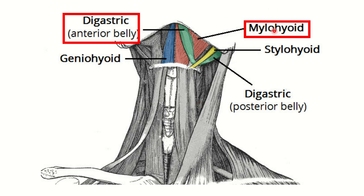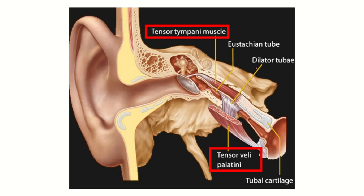Here we can see the mylohyoid muscle and the digastric muscle. This is the anterior belly and this is the posterior belly of the digastric. Only the anterior belly is supplied by the trigeminal nerve. The mylohyoid muscle is also supplied by the trigeminal nerve. However, the posterior belly of the digastric is not supplied by the trigeminal nerve.